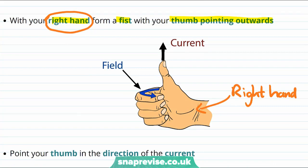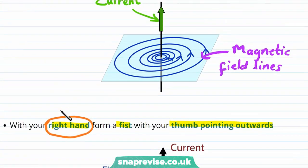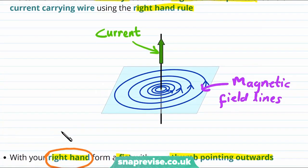Then if we take our thumb and we point it in the direction of the current. So for example in this picture we are pointing our thumb upwards because if we go back to the original image the current was pointing upwards.